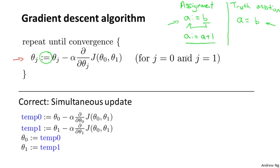So whereas I can write a colon equals a plus one, meaning increment a by one, I wouldn't ever write a equals a plus one because a and a plus one can never be equal to the same values. So that's the first part of the definition.